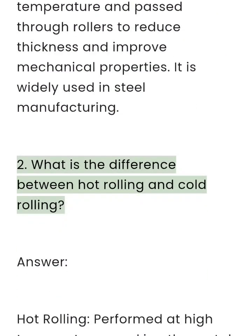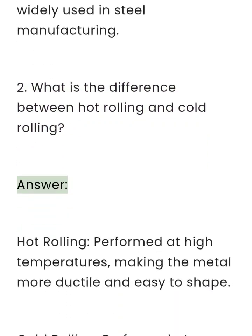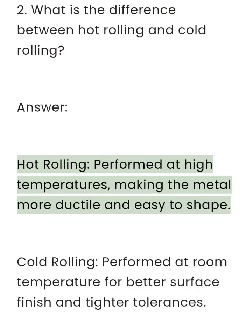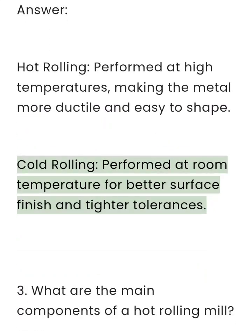Question 2: What is the difference between hot rolling and cold rolling? Hot rolling is performed at high temperatures, making the metal more ductile and easy to shape. Cold rolling is performed at room temperature for better surface finish and tighter tolerances.